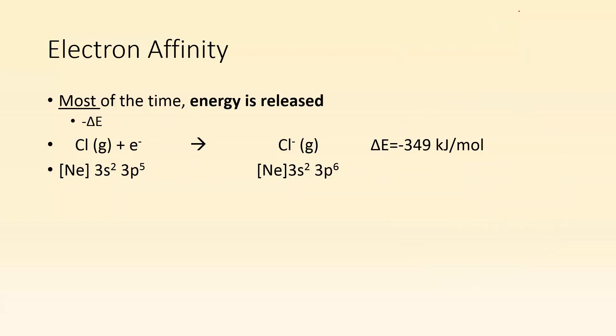Most of the time, energy is released, which means you have a negative delta E. For example, if chlorine gas, you've got an atom in the gaseous state, I'm adding an electron to it. The delta E is a negative value of negative 349 kilojoules per mole. You can see we added one more electron, and most of the time energy is released.